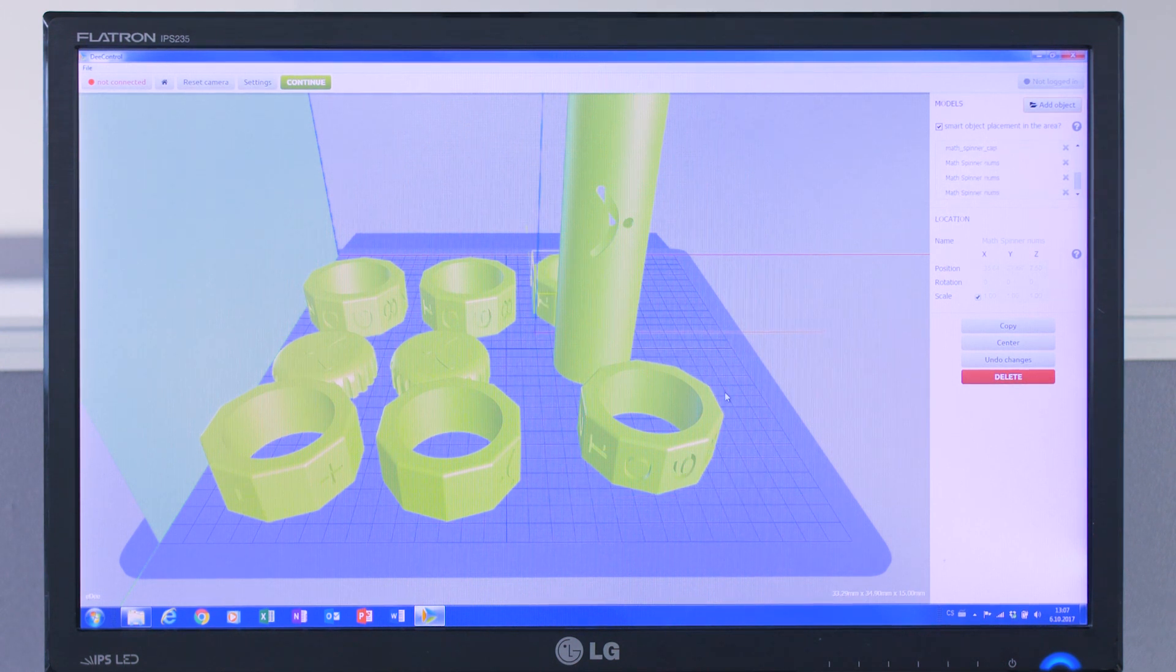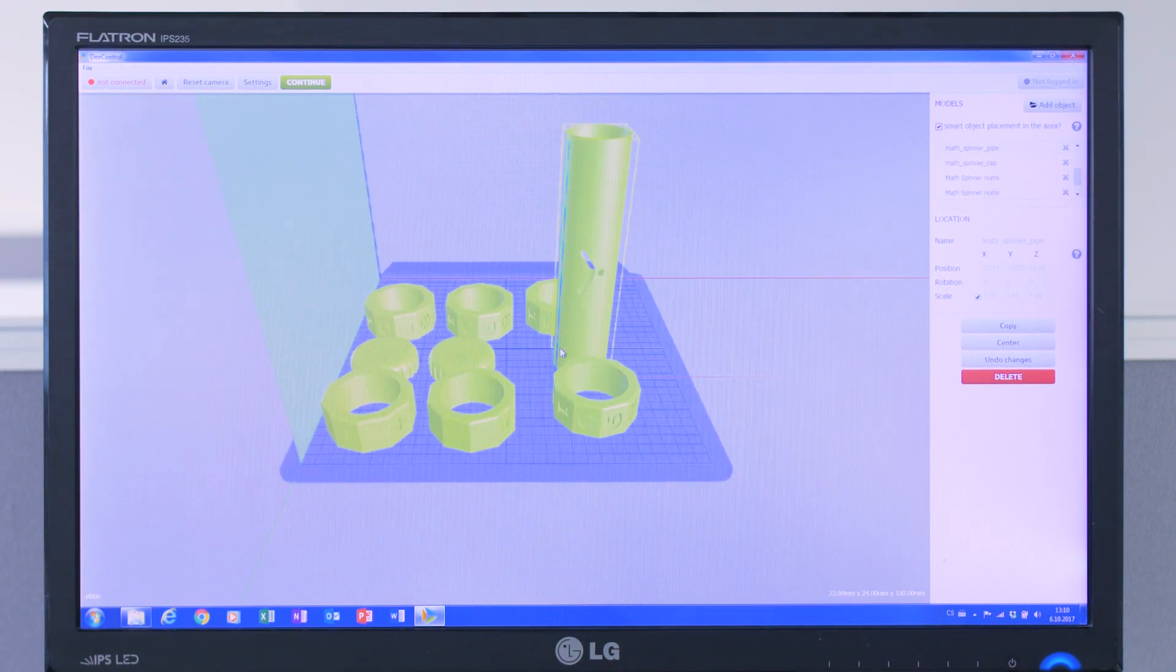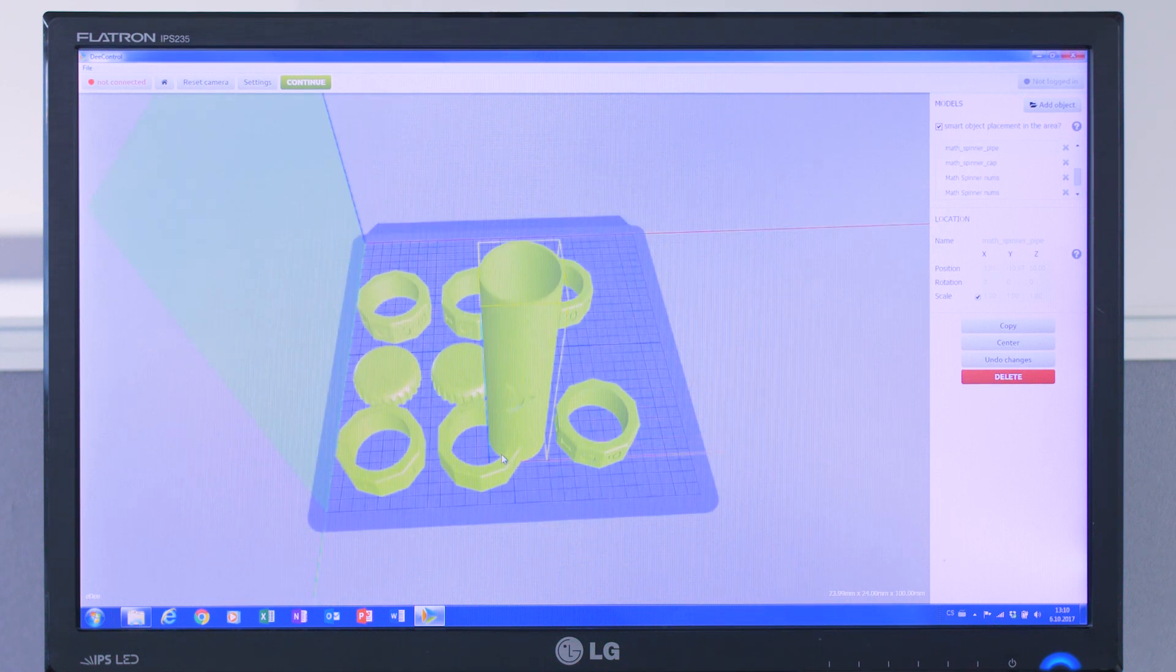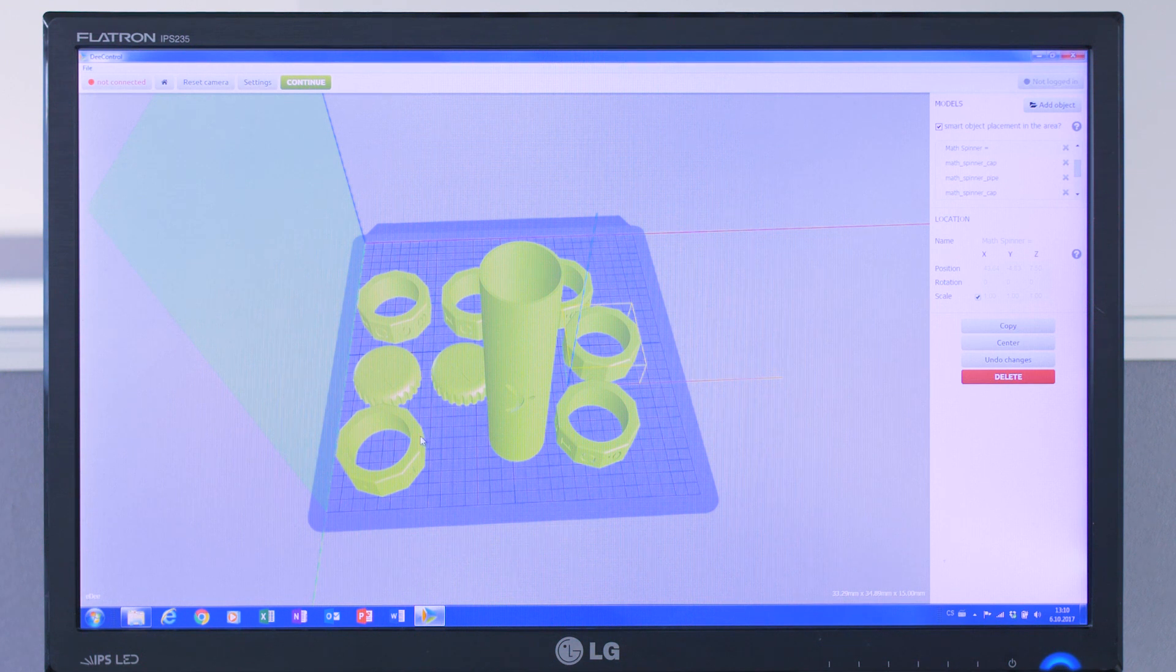Now, I have the nine pieces I need. It is important now to position the objects on the print bed so they don't overlap each other. I can either move the pieces by using my mouse to drag and drop, or I can use the XY coordinates.